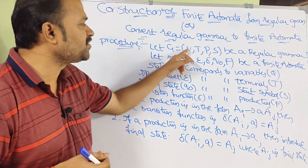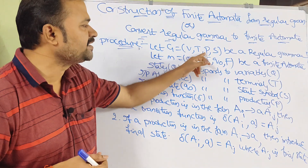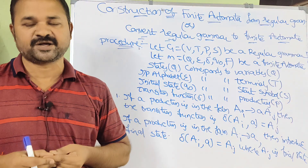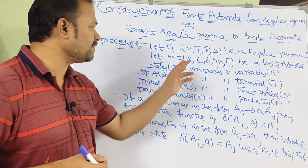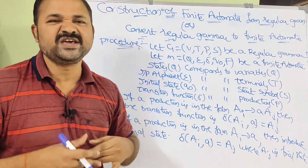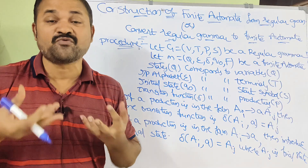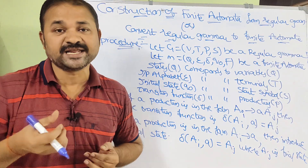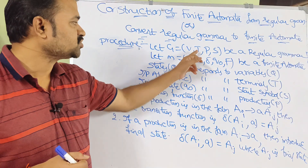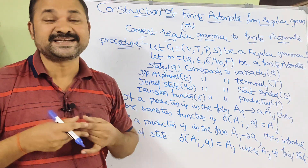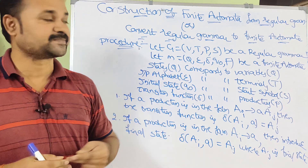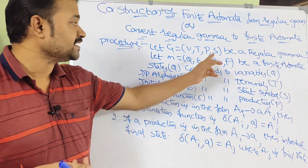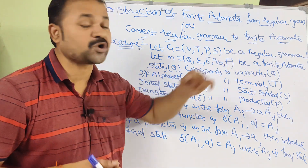Let G = (V, T, P, S) be a regular grammar. We know all four tuples: V means set of variables, which are nothing but non-terminals; T means terminal symbols; P means production rules; and S means start symbol.